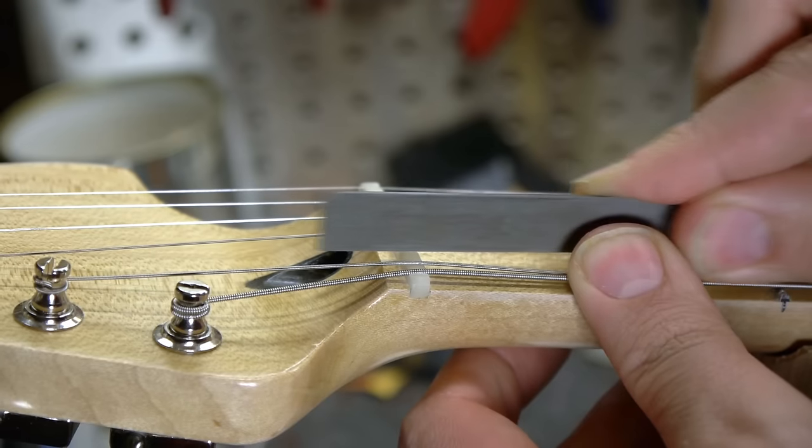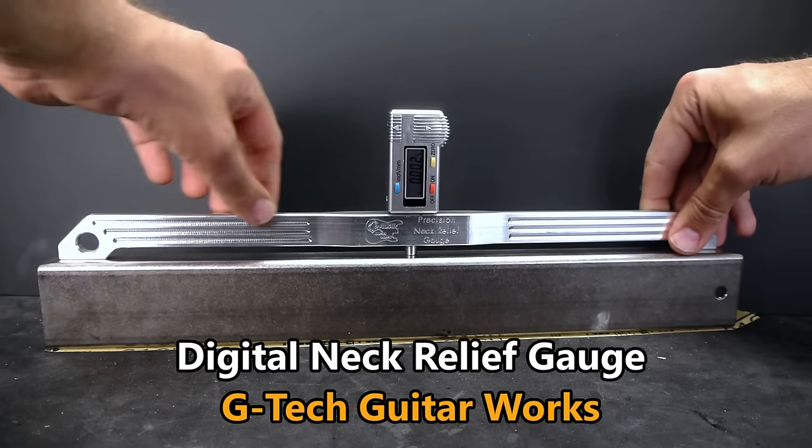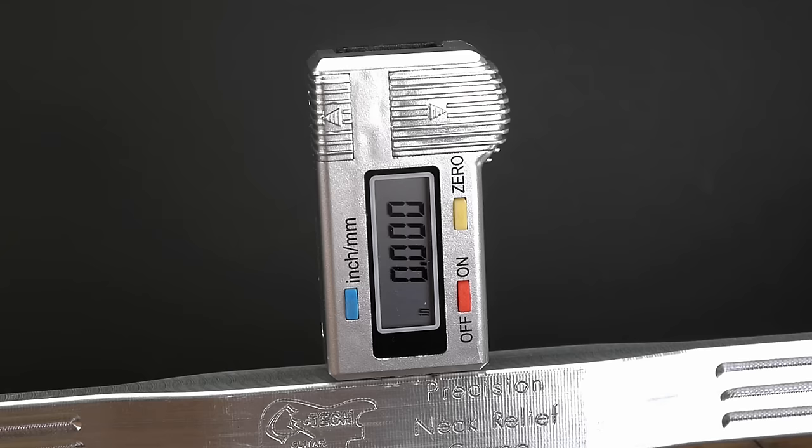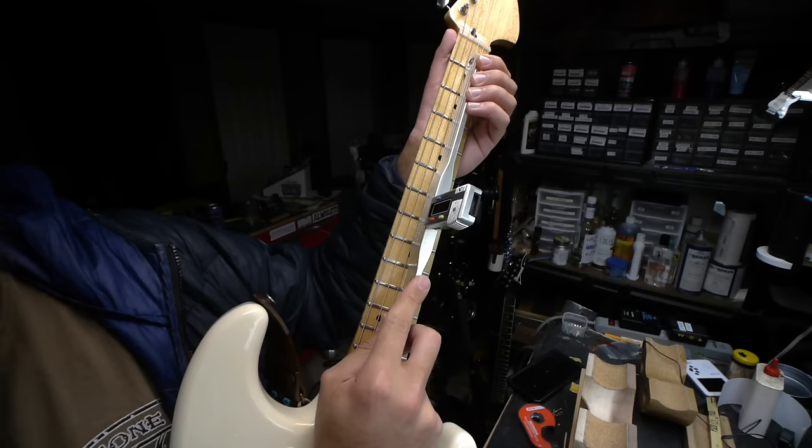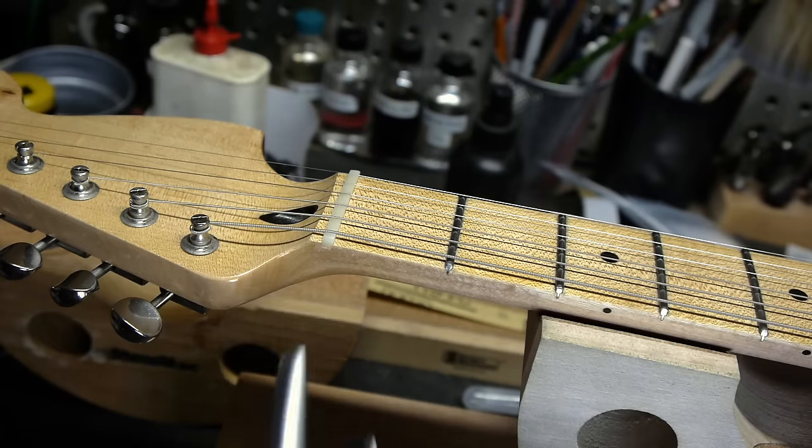Then it's time to cut the slots to depth. Be sure that your setup is dialed in with your exact desired neck relief, as that greatly affects the action at the first fret. I prefer my necks as close to dead straight as possible, meaning zero relief. I check relief in the playing position using a digital neck relief gauge from G-Tech Guitars. Once the relief is set, you can put a capo on the first fret to eliminate the first fret action as a variable.